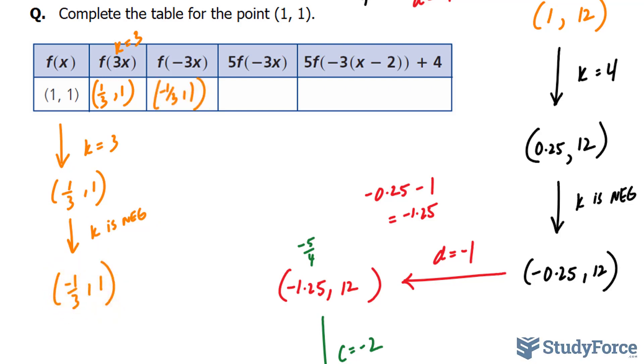Next, we will apply a positive a value of 5. If a = 5, we have a vertical stretch by a factor of 5, and so we leave our x coordinate the way it is and we multiply our y coordinate by a factor of 5. 1 times 5 is 5.